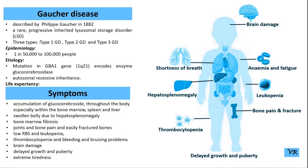Gaucher disease is of three types: non-neuropathic Gaucher disease, that is type 1; acute neuropathic Gaucher disease, type 2; and chronic neuropathic Gaucher disease, that is type 3. Symptoms of Gaucher disease include hepatosplenomegaly,